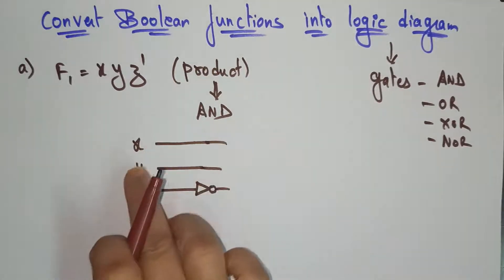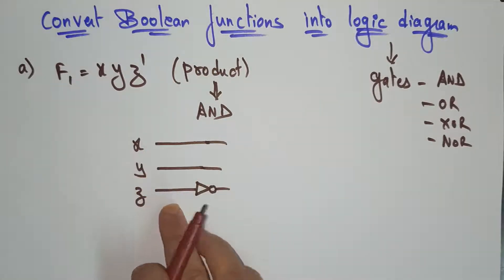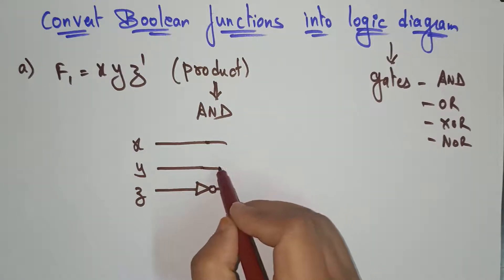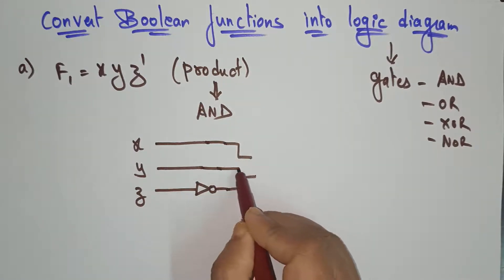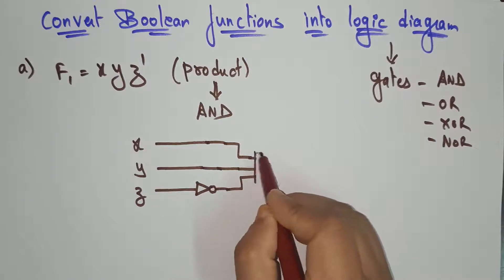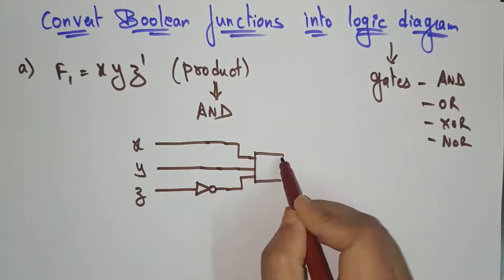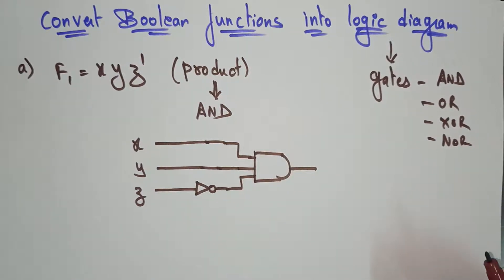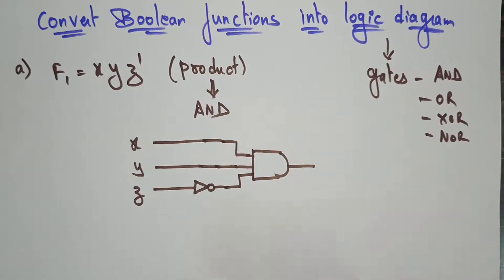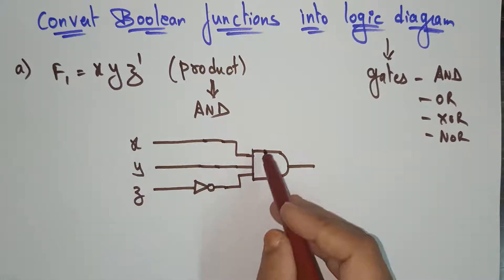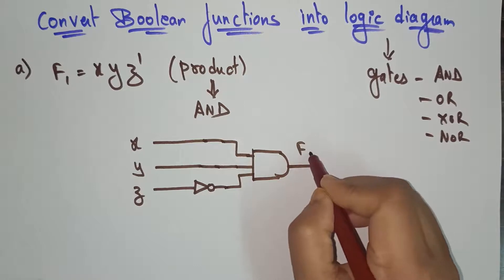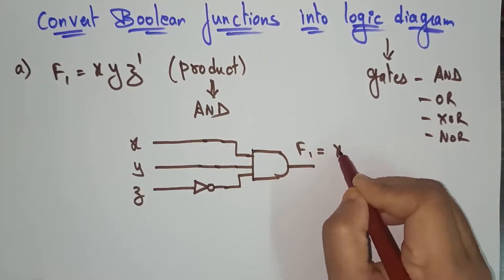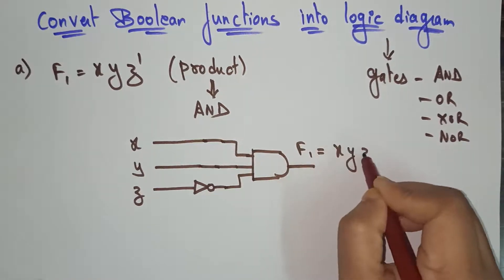So x, y, and z' are connected to the AND gate. That's a simple thing. x, y, z' — I am using the AND gate, and this is the final result. F1 is equal to x·y·z'.